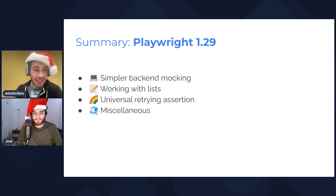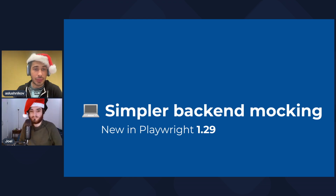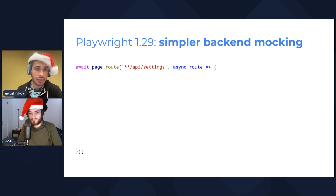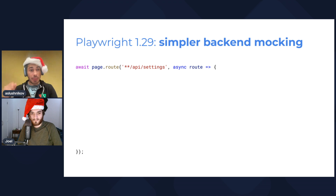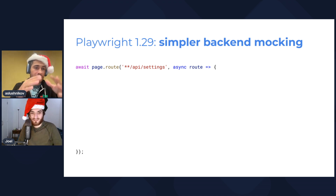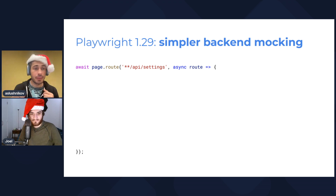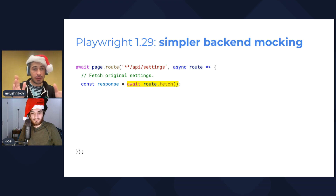On to the new stuff. We have this agenda, and let's jump right to the first part: simpler backend mocking, new in 1.29. Say, for example, I'm here doing my test and I am intercepting a settings request. I want to fetch the original settings request from the server, modify it a little bit, and proceed. Before, you could have used page.request to do an API request to the server, but now we've streamlined this experience with a new route.fetch method.